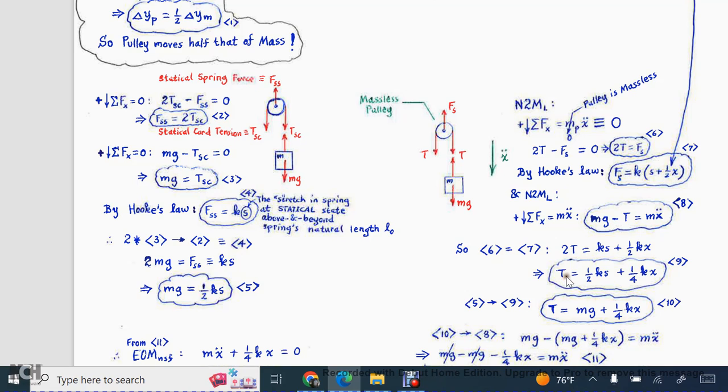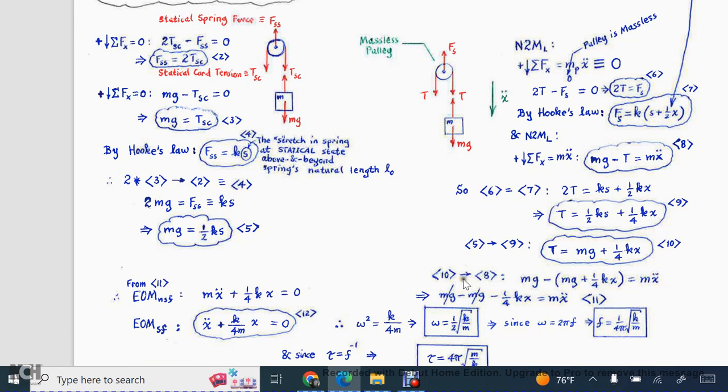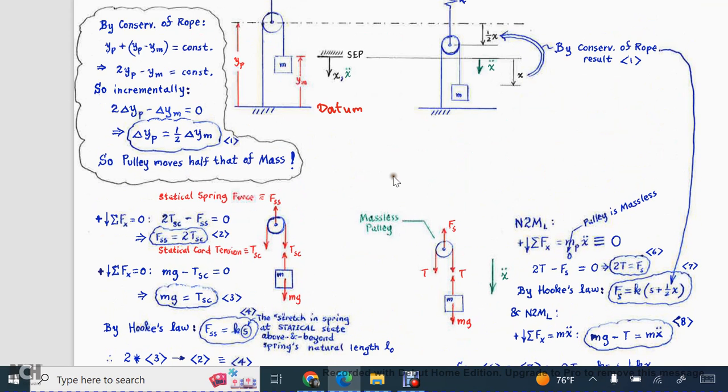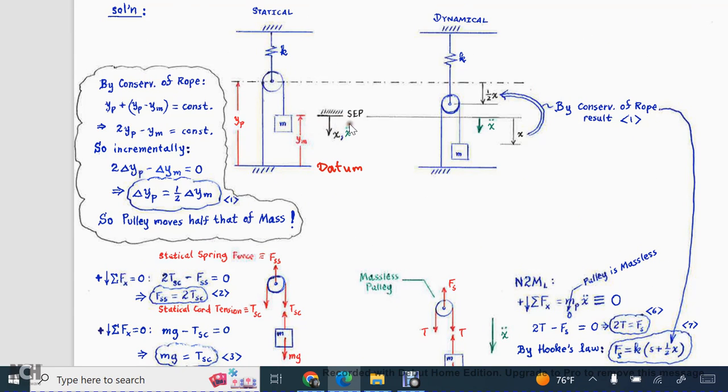When you do that, you get double the tension is equal to this term. So if you solve for the tension, you get t is equal to one half of ks plus a quarter kx. That's what I'm calling equation nine. Then when you bring the statical result, equation five, and sub it into equation nine for the one half of ks term, you can find the relationship t is equal to the weight plus a quarter kx. So we're just going to keep on following the mapping here. We are now putting this last equation, number 10, back into equation eight. When you do that, you get this result right here, and notice when you look at the algebra that the weight terms are going to cancel out.